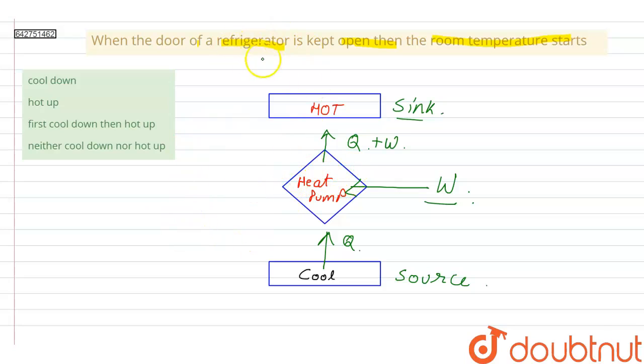So in this way a heat pump works, and on this same principle the refrigerator works. So according to the question, when the door of the refrigerator is open, then the whole room is taken as source by the refrigerator, and then to cool it down the refrigerator takes some heat from the room.